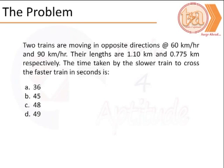The time taken by the slower train to cross the faster train in seconds is. Our options are A 36 seconds, B 45 seconds, C 48 seconds, D 49 seconds.